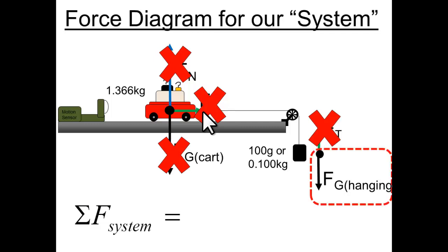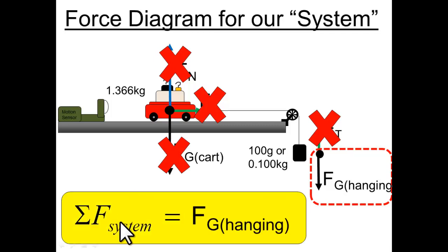So, the only force left over when we add up all five forces in the system is the force of gravity on the hanging mass. So, we see that this force of gravity on the hanging mass, which we said was the slope of our equation, is also equal to the sum of the forces on the whole system.